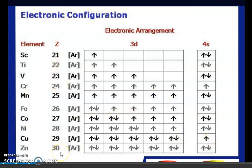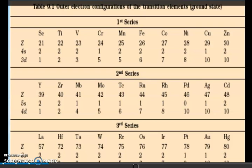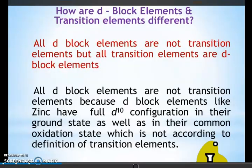You must remember the atomic numbers because without them you cannot do D block or Coordination chapters. Keep this full sequence of configurations and write it repeatedly. The first series starts from Scandium and goes to Zinc — a group of 10 elements. The second series starts from Yttrium and goes to Cadmium. The third series starts from Lanthanum and goes to Mercury.